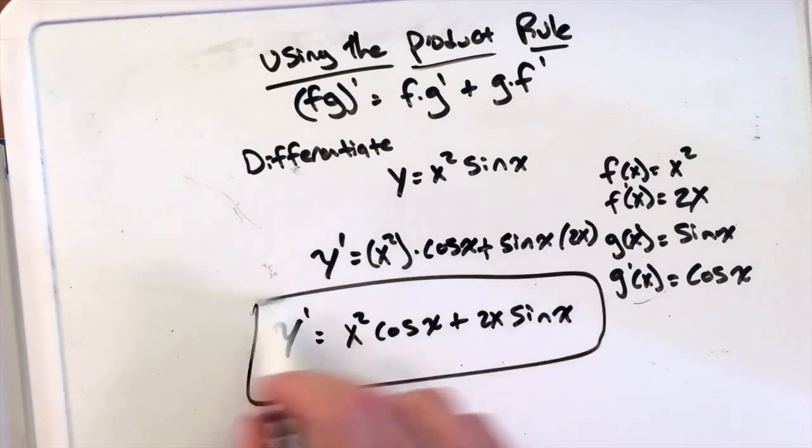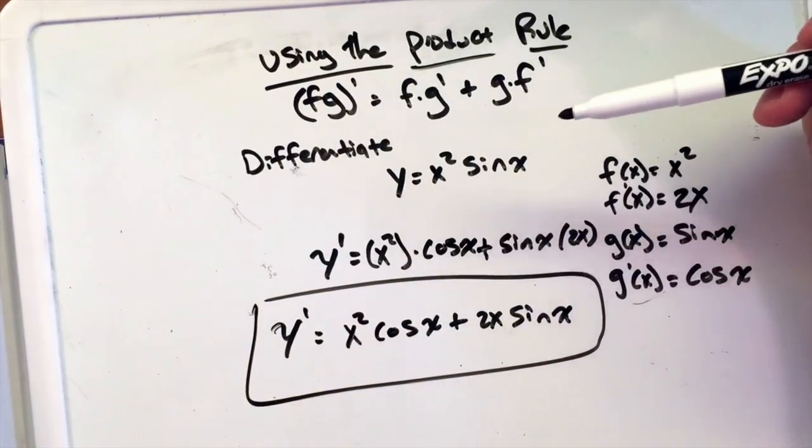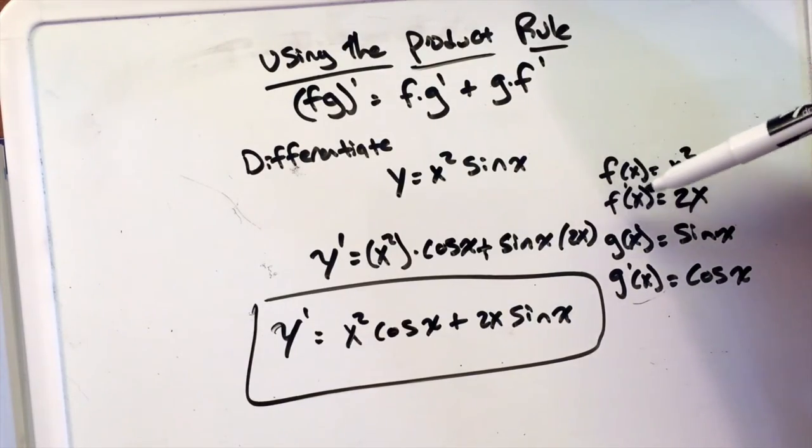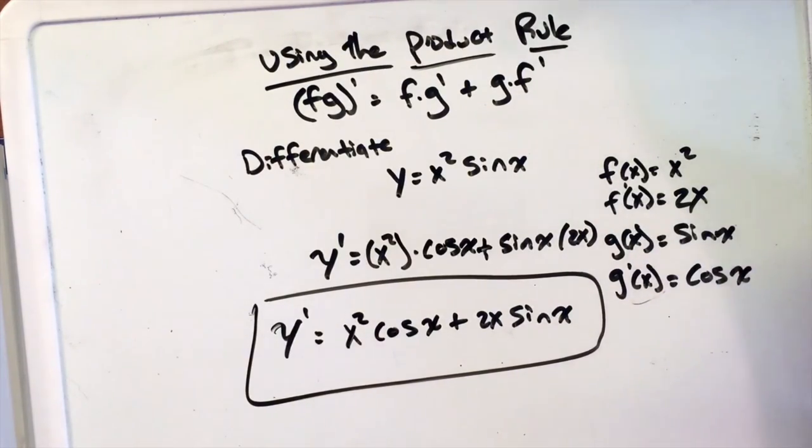And now we have derived the basic function of y equals x squared times sine of x. Now eventually you'll get more comfortable and won't be writing this f, f prime, g, g prime, but it's a great way to start so you make sure you get the product rule down.